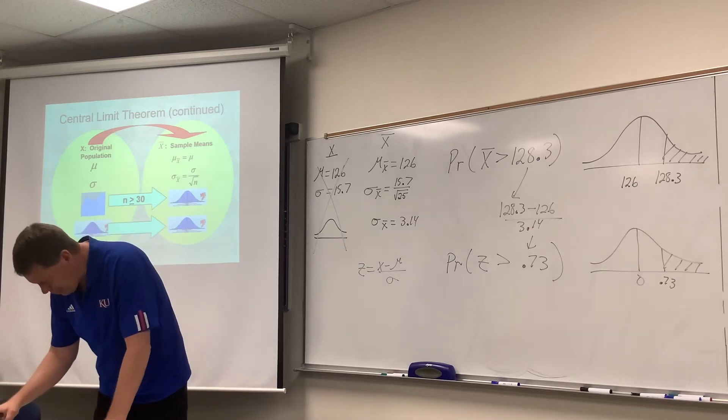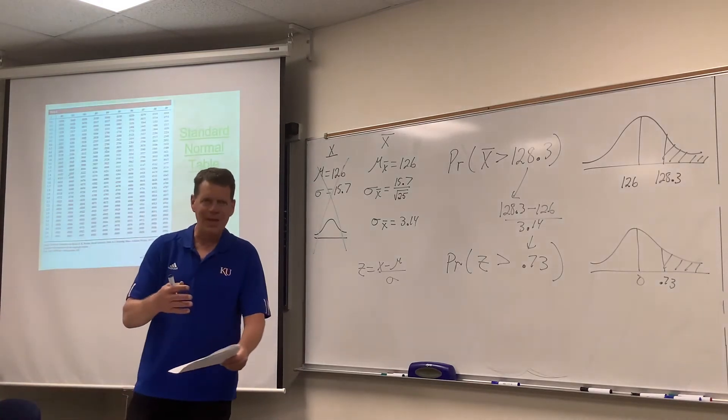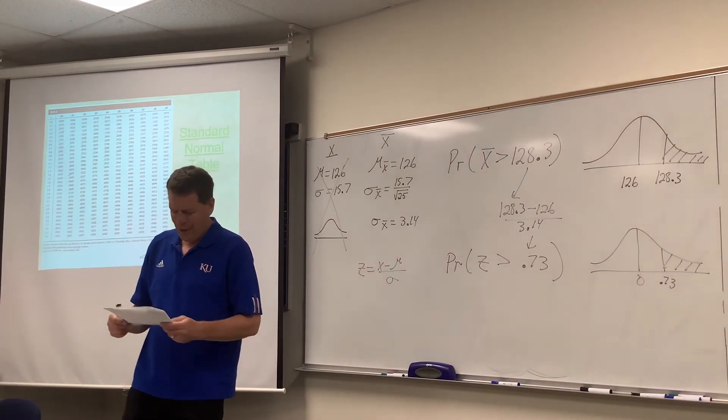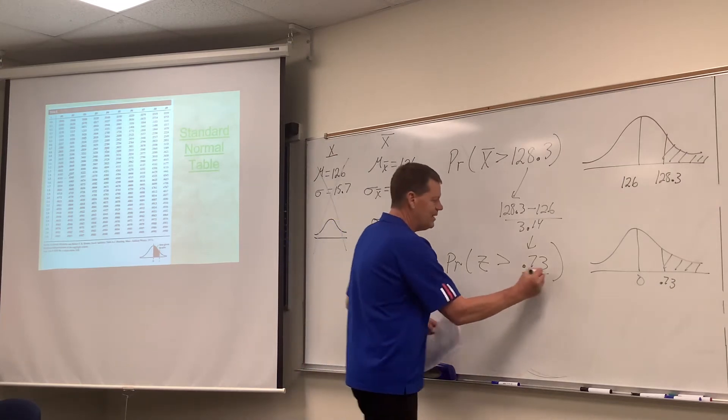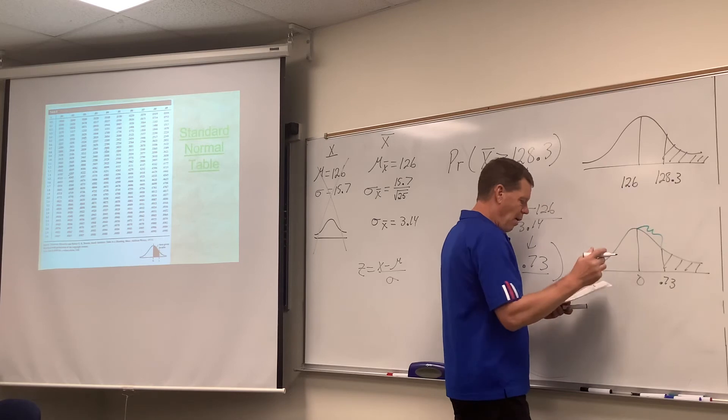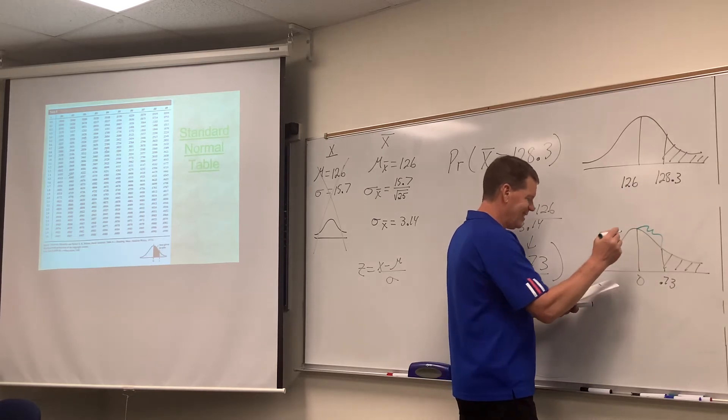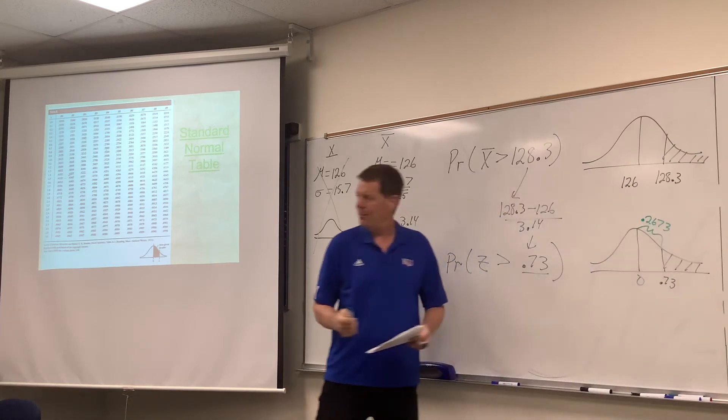So then, we would be able to go to our table. Stop. Table time. We look up 0.73, and it turns out that 0.73 in that table will give us a middle sliver of 0.2673. That's what I found earlier.